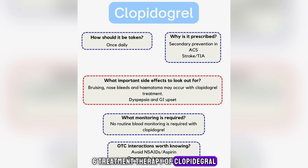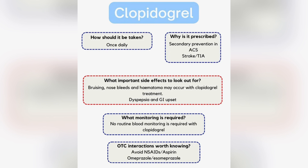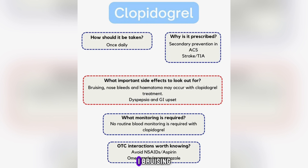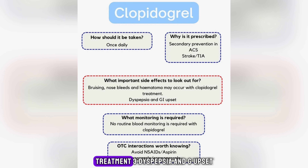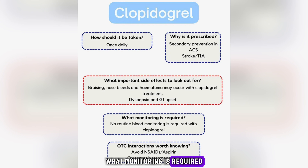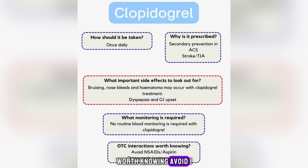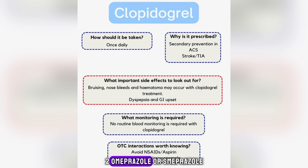Treatment therapy of clopidogrel. How should it be taken? Once daily. Why is it prescribed? 1. Secondary prevention in acute coronary syndrome. 2. Stroke or transient ischaemic attack. What important side effects to look out for? 1. Bruising. 2. Nosebleeds and haematoma may occur with clopidogrel treatment. 3. Dyspepsia and GI upset. What monitoring is required? No routine blood monitoring is required with clopidogrel. Interactions with over-the-counter medications: avoid 1. non-steroidal anti-inflammatory drugs or aspirin; 2. omeprazole or esomeprazole.